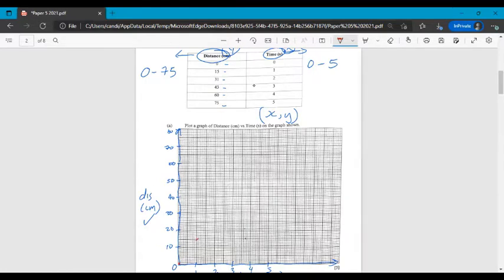0, 0. Then 1 and 15. That's here. 2 and 31. So that's 30 and then 1 up. That would be right there. 3 and 43. About there. 4 and 60. 5 and 75 is our last point.